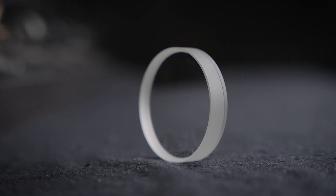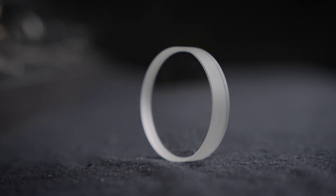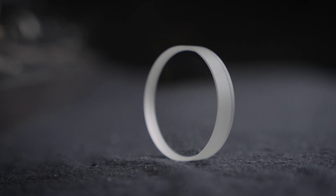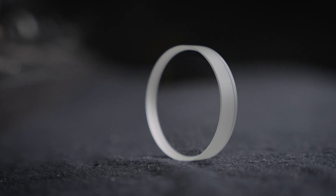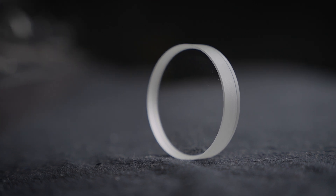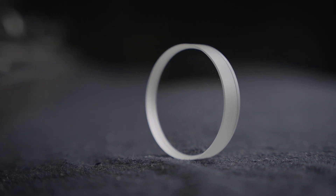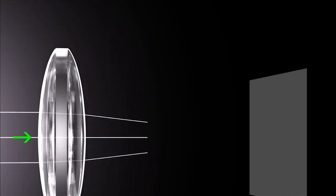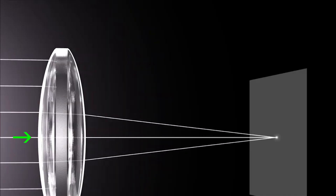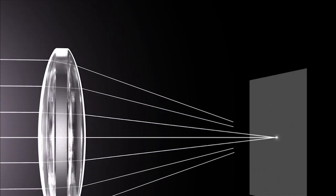A lens, put simply, is a piece of glass that bends light. Lenses have specific chemical compositions to give them specific properties. They are shaped a certain way so that they can refract or bend light at a very specific angle, and they are polished and chemically coated in order to allow them to transmit as much light as possible and reflect as little as possible.